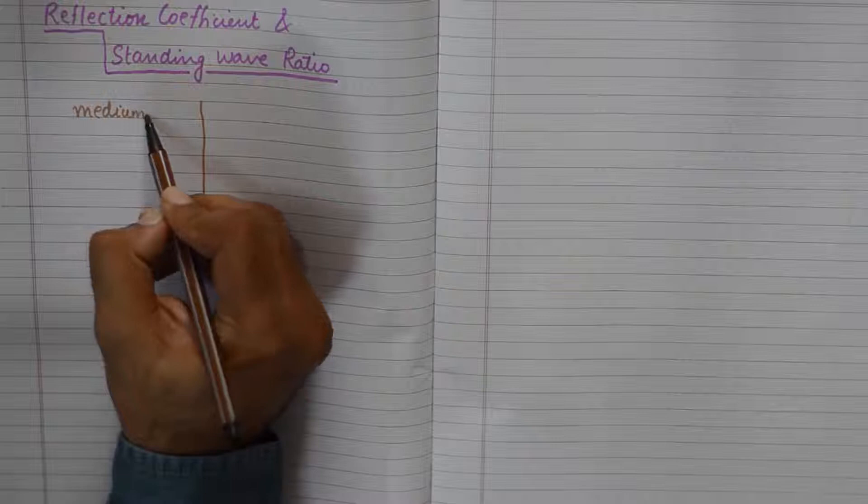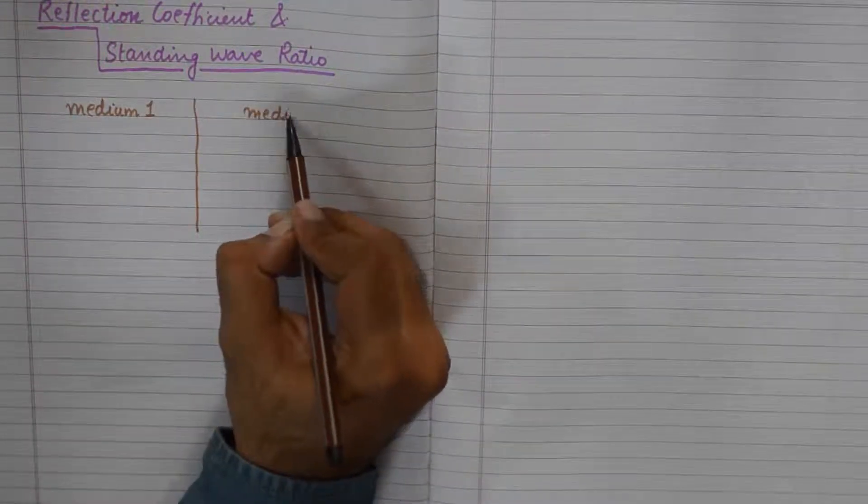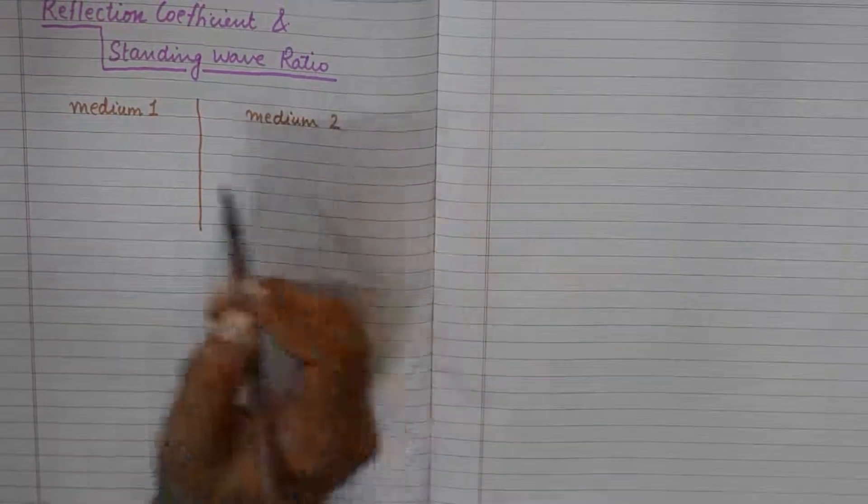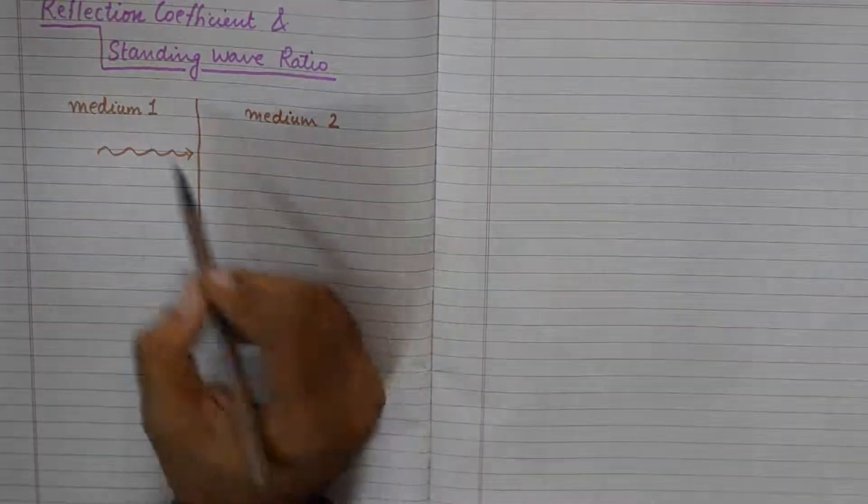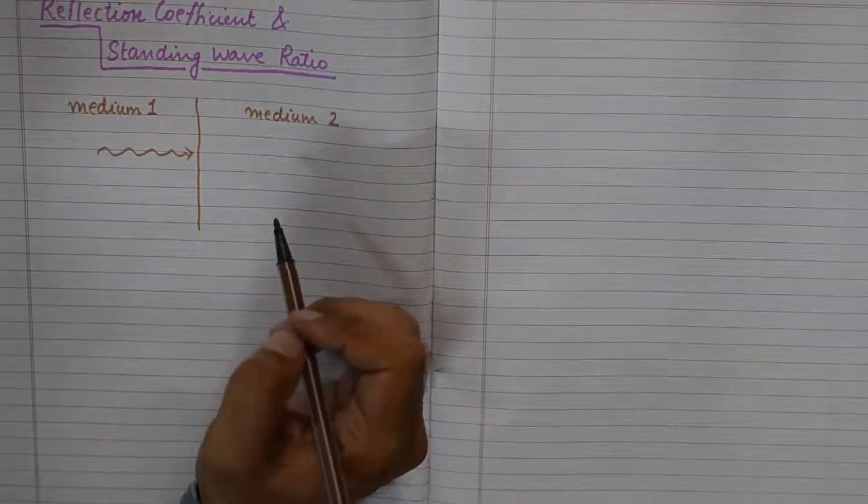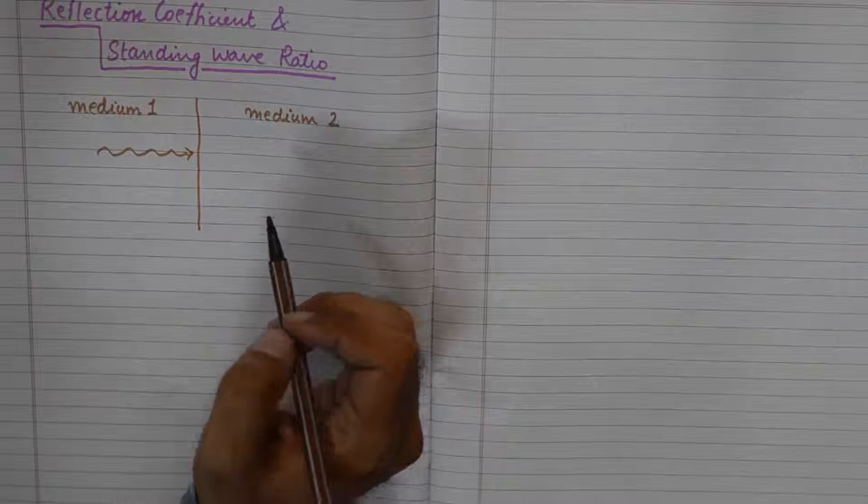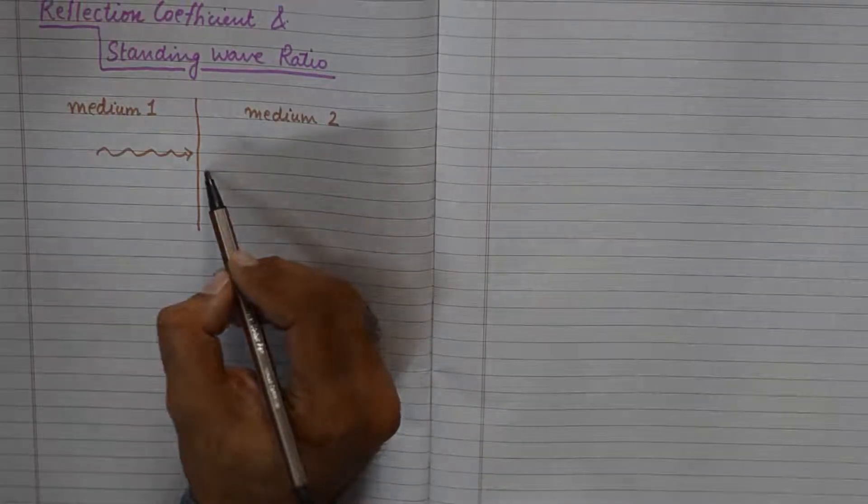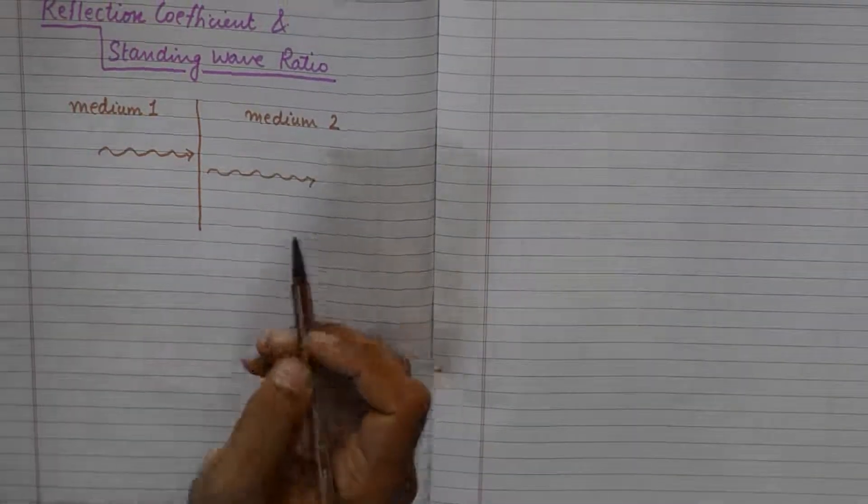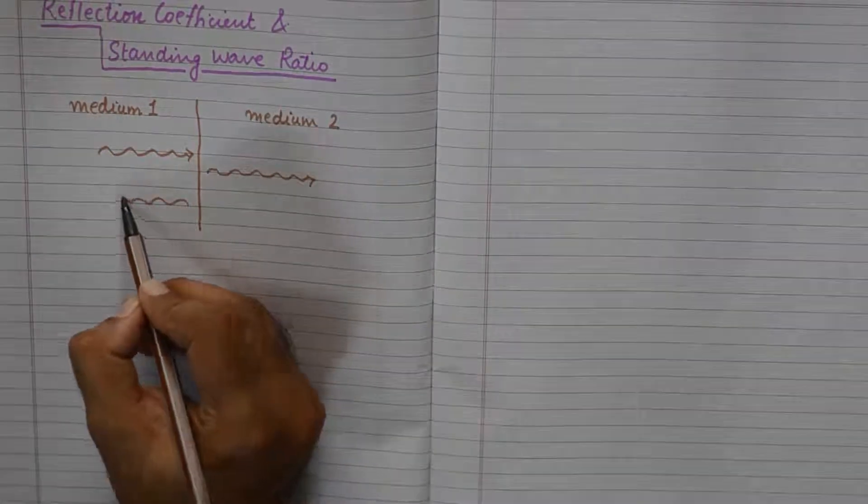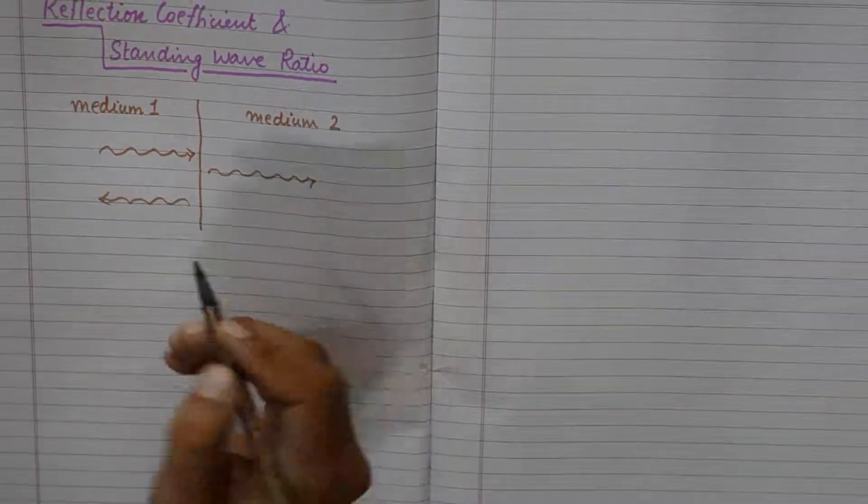So the very fundamental nature of communication is that whenever a signal goes from one medium to the other, for example from medium 1 to medium 2, it is not possible that the entire signal will pass through. Some of it is bound to bounce back. Now why does that happen?